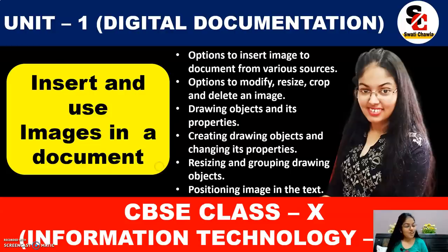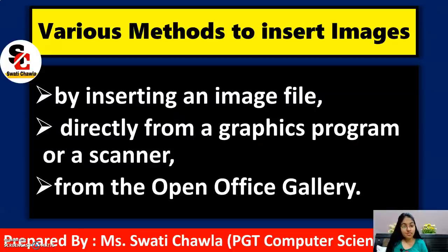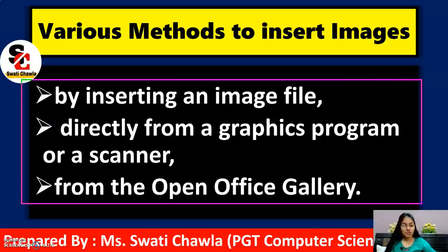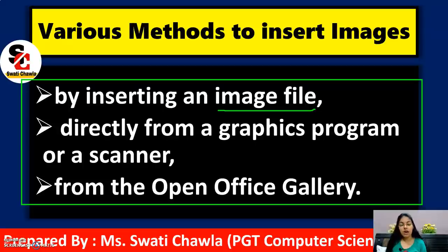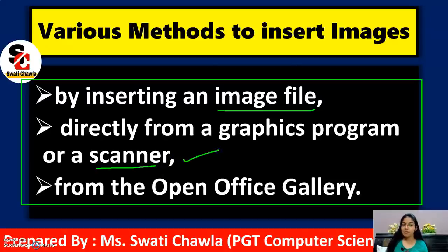Now let's start with our very first topic — the various methods to insert images. In OpenOffice Writer, we have three main methods to insert an image. The first one is by inserting an image file — meaning images you have already saved in your system. The second method is with the help of a scanner, which is an input device.